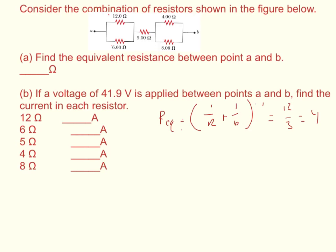And so then Req2, we're looking now at the 4 ohm and the 8 ohm. We'll reduce that down to an equivalent resistance equal to 1 over 4 plus 1 over 8, which is going to equal 3 over 8. The inverse of that is going to equal 8 over 3, which is equal to 2.667.